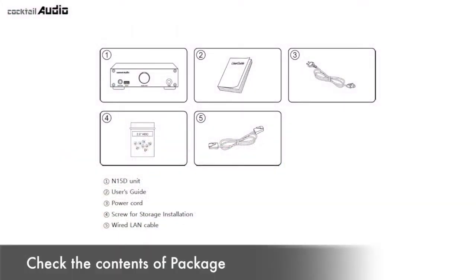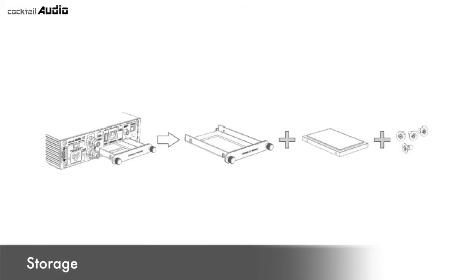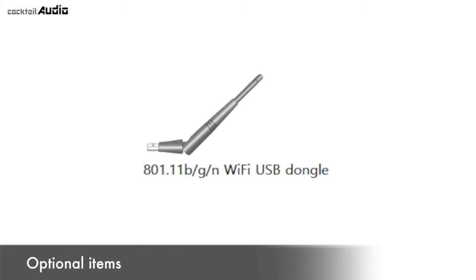The N15D package includes the unit, user's guide, power cord, manual, screws for storage installation, and a wired LAN cable. If purchased without storage, you can install a 2.5-inch SATA HDD or SSD. You can purchase a WiFi USB dongle as an optional accessory; non-approved WiFi dongles will not work properly.